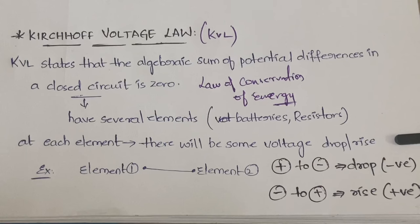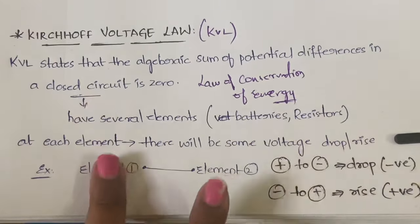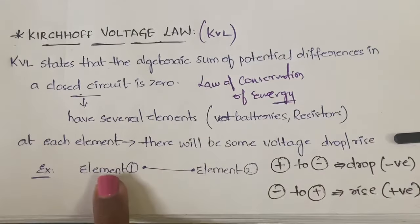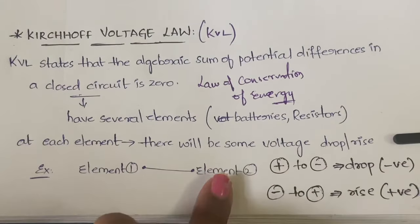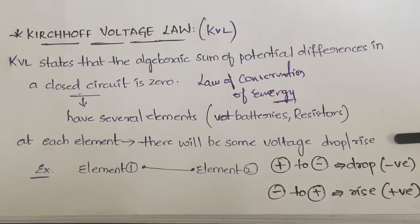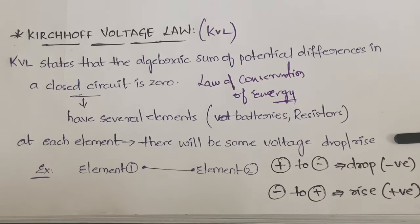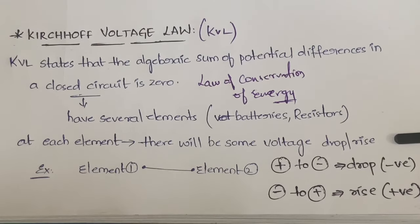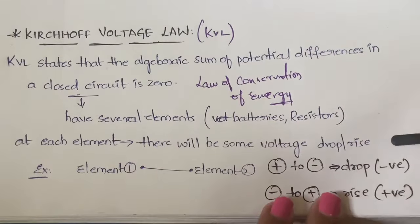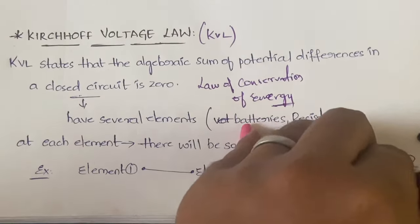When do you understand that the potential difference has dropped or risen? If you are moving from positive to negative charge, it is considered a drop — you take the negative symbol. If it is moving from negative to positive, it is considered a rise — you take the positive symbol. I know you may be getting confused; I'll explain with a diagram.